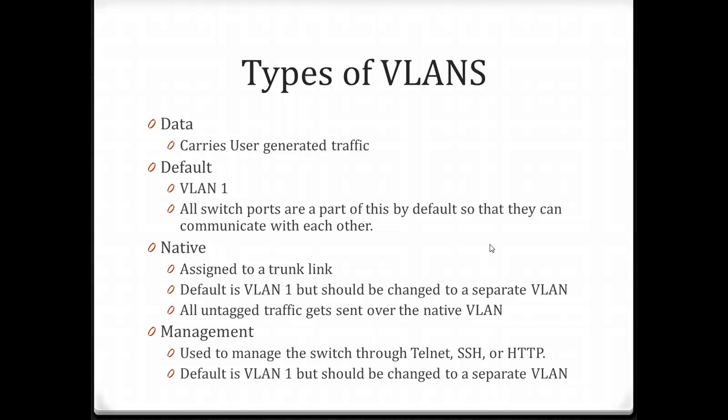We have the native VLAN, which is used on our trunk links. This is also default VLAN 1, but it should be changed to a separate VLAN number, for example VLAN 50. All untagged traffic gets sent over the native VLAN — if a frame arrives at a switch without a VLAN tag, it will be sent over the native VLAN. The management VLAN is used to manage a switch through Telnet, SSH, or HTTP. By default this is VLAN 1, but it should be changed to a separate VLAN, for example VLAN 99. It is good practice to separate your native VLAN, management VLAN, and data VLAN to separate numbers.